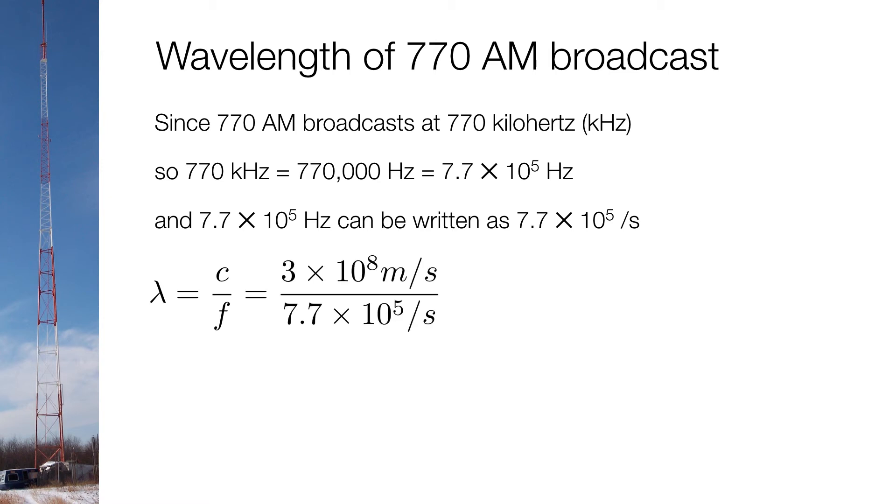So the speed of light is 3 times 10 to the 8th meters per second. The frequency of this broadcast is 7.7 times 10 to the 5th per second. So the per seconds cancel, giving us a total value of 390 meters. It's no wonder that the radio masts need to be tall.